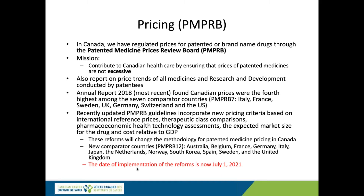There are some significant changes coming to PMPRB. The reforms were supposed to come into effect last year, then January 1st, and have now been further delayed until July 1st. The process for determining the PMPRB price can begin even prior to Health Canada approval, and technically continues throughout the life cycle of the product due to PMPRB's price review power — meaning they manage the price throughout the product's life cycle, not just at a single point in time.